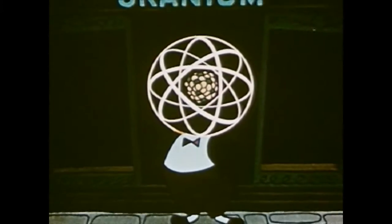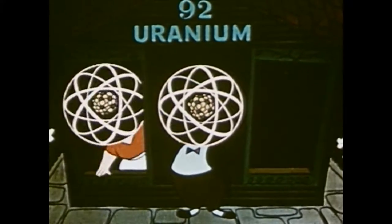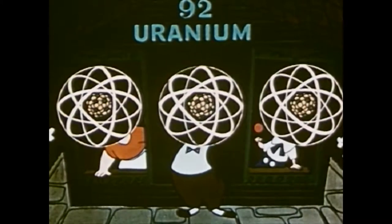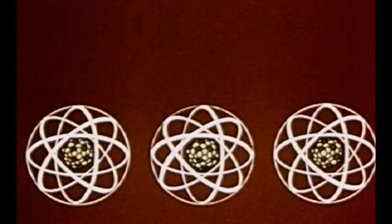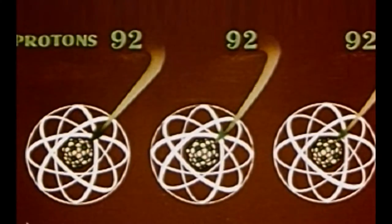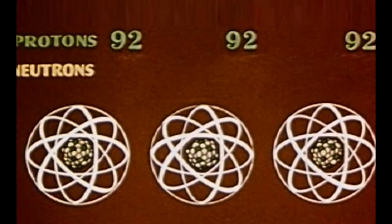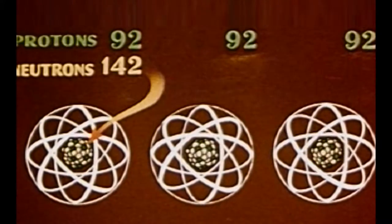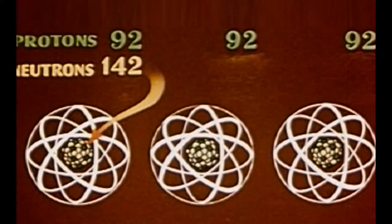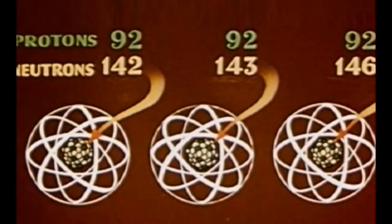For any given element, the number of protons must remain the same, but the number of neutrons may vary. The atomic weight of an atom is the number of protons plus the number of neutrons. Natural uranium may contain 142, 143, or 146 neutrons.